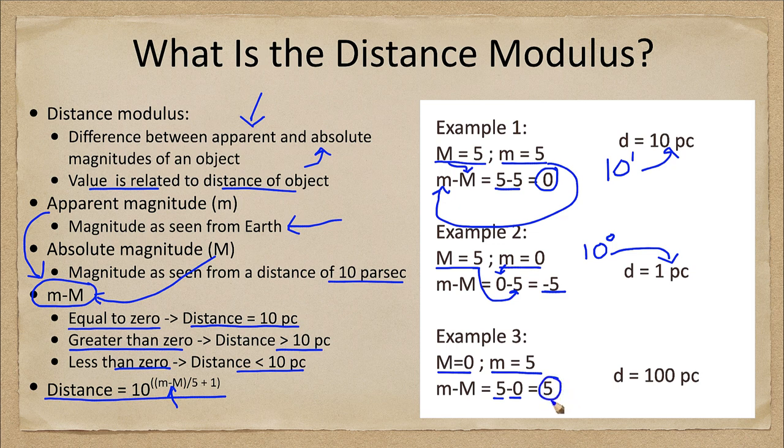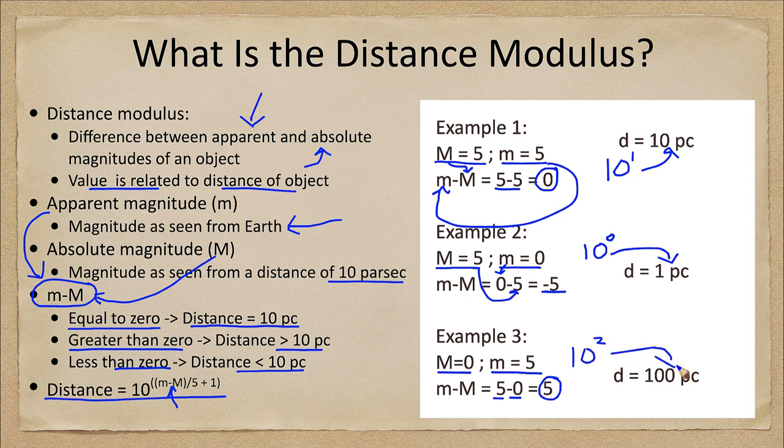And then we can go ahead and do our calculation. 5 divided by 5 is 1, add 1 to that we get 2, and 10 to the second power is 100 parsecs away. You can certainly do this for more detailed calculations and differing values of the absolute and apparent magnitudes.